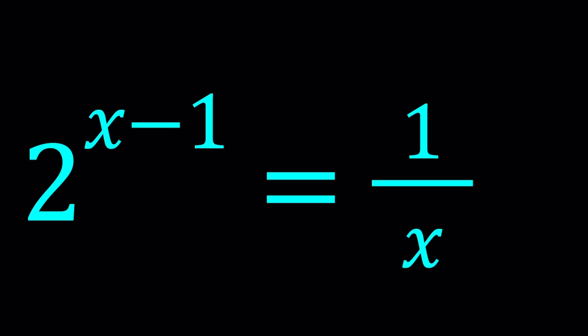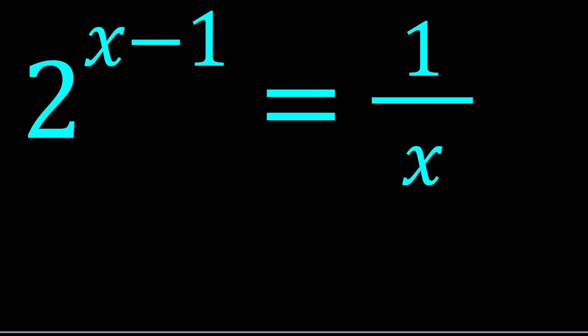So let's go ahead and manipulate this equation a little bit to make guessing a little easier. Let's write this as 2 to the power x divided by 2 to the first power, which is 2, equals 1 over x. And then after cross multiplication, this gives us x times 2 to the x equals 2. And at this point, you probably guessed that x equals 1 is a solution.